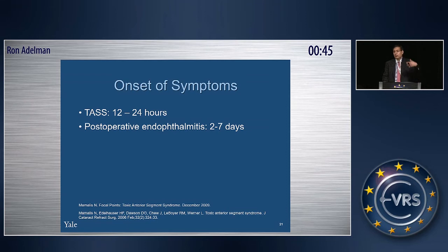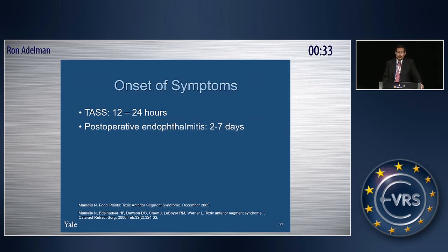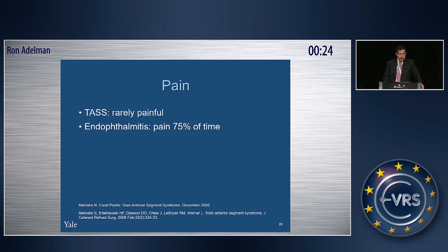This is because if a single organism enters the eye during surgery, it must replicate — one becomes two, two become four, eight, and so on — until millions of organisms are present before clinical endophthalmitis is apparent. That replication takes time, while TASS is an inflammatory reaction that occurs shortly after surgery. Also, endophthalmitis is most of the time painful, whereas TASS has minimal pain.